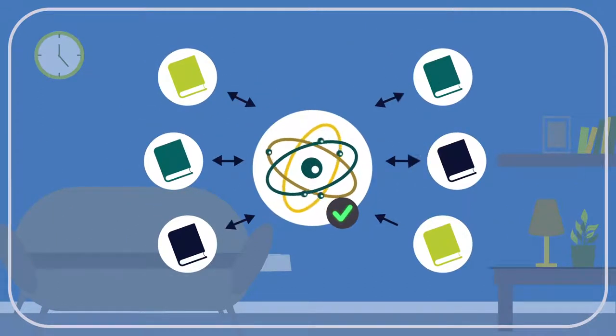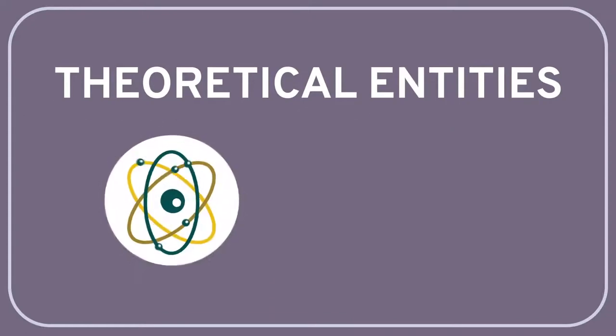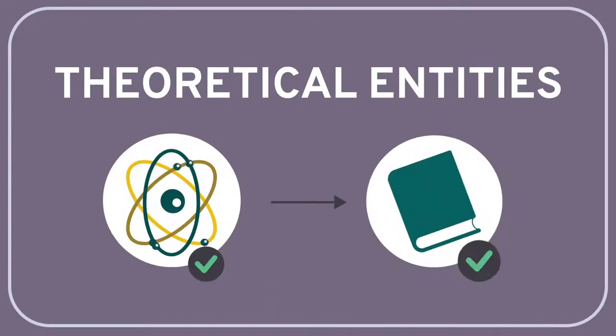Such things are called theoretical entities. A theoretical entity is something that we are confident is real, but only because it has to be real in order for a theory we believe in to be true.